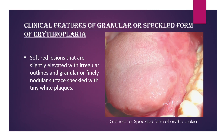Clinical features of the granular or speckled form of erythroplakia: these are soft, red lesions that are slightly elevated with irregular outlines and a granular or finely nodular surface speckled with tiny white plates.